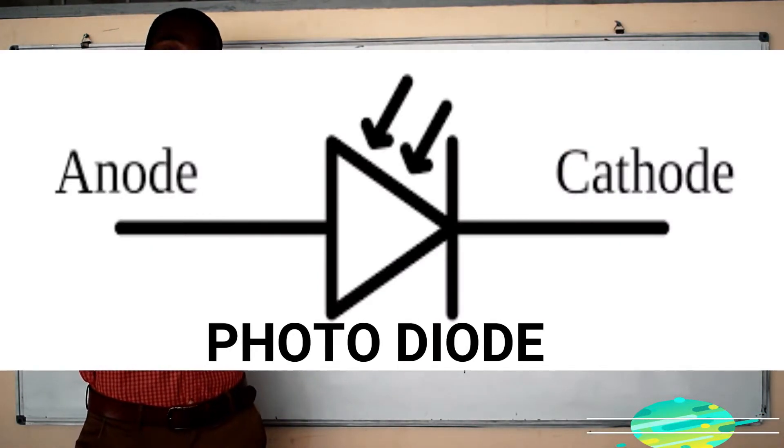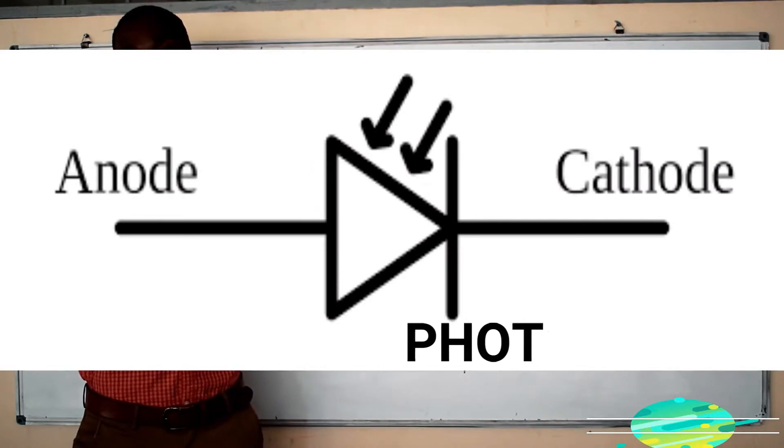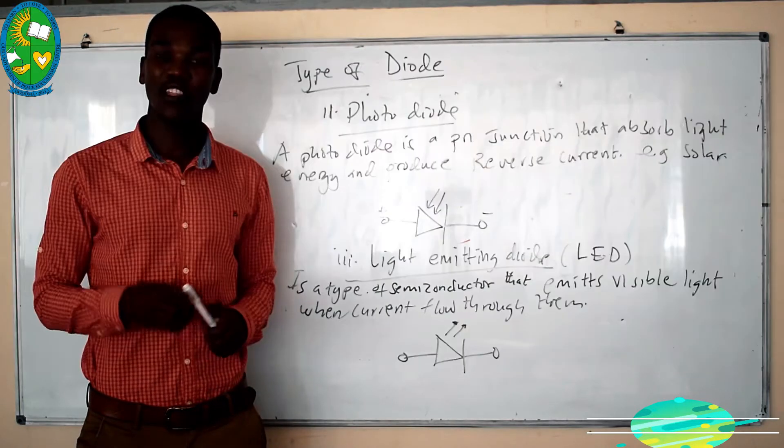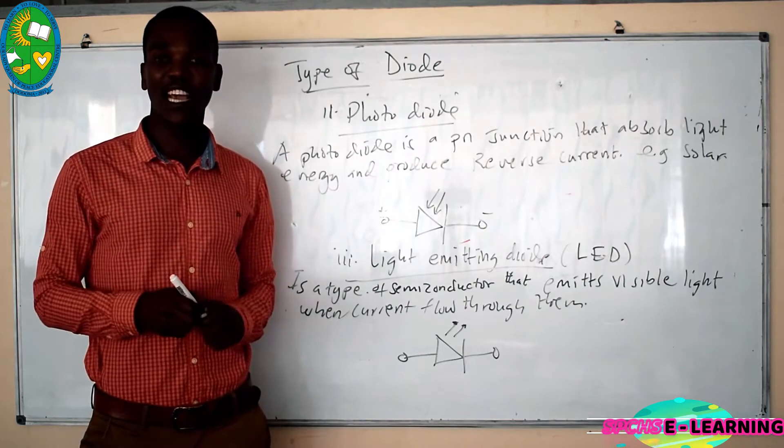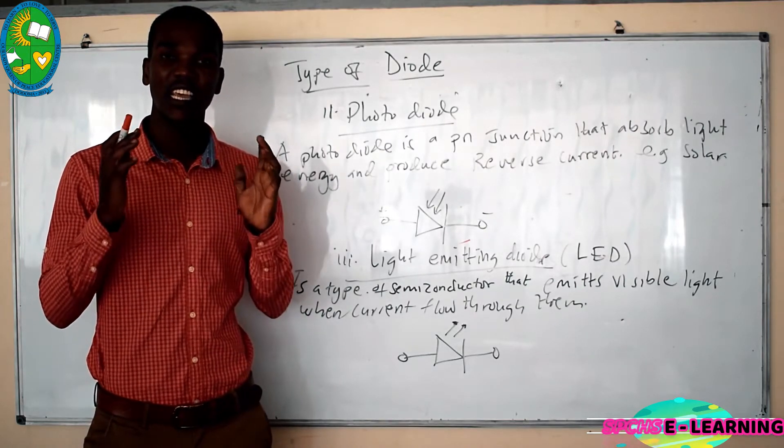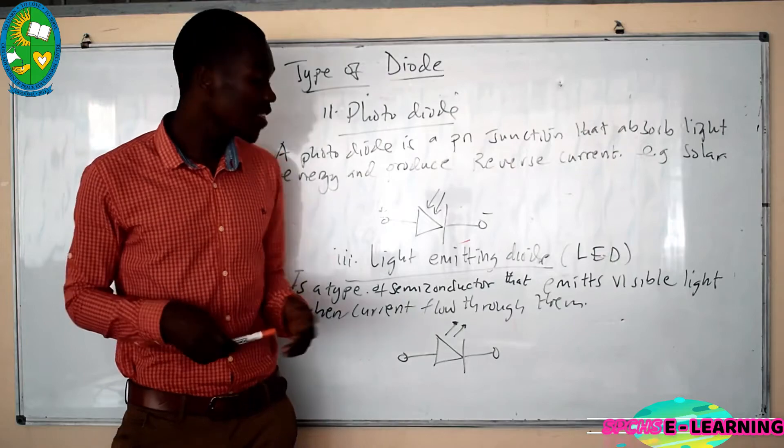The intensity of reverse current which is produced depends on the intensity of light. Or the amount or the magnitude of the current produced depends on the intensity of light.